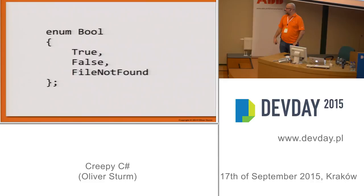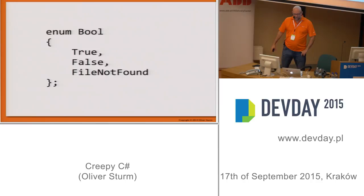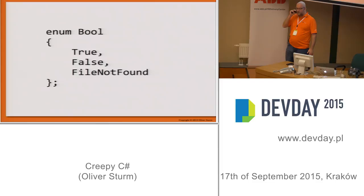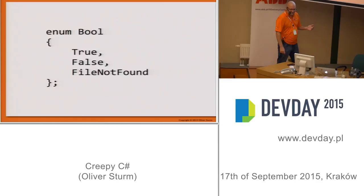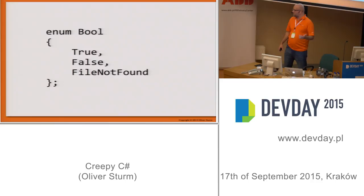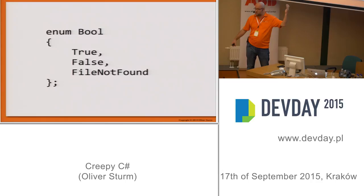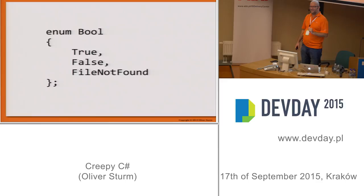That's a classic. This person was obviously aware of boolean logic — they just thought it wasn't good enough and added 'FileNotFound' as a third state. True, False, FileNotFound. Just imagine doing this for every single purpose. The idea of an enum like this might be good depending on context, but maybe they shouldn't have called it 'bool.' That's one of my favorite boolean versions.